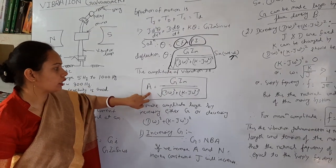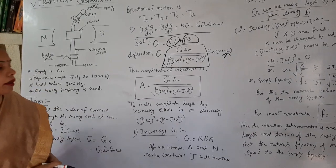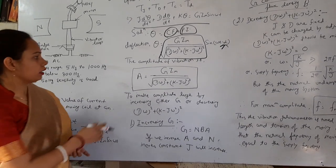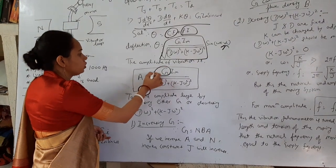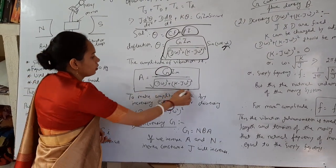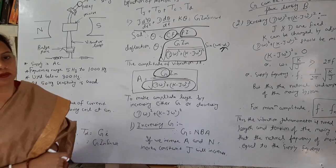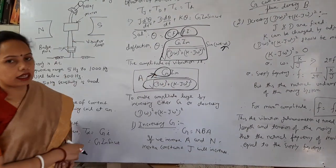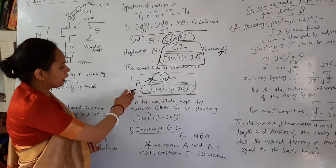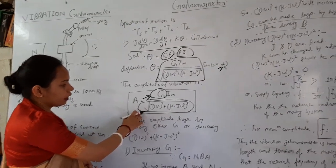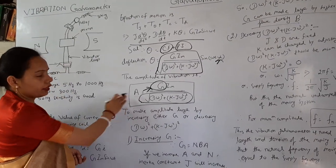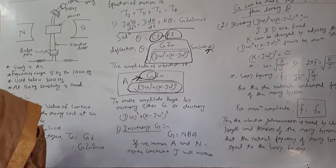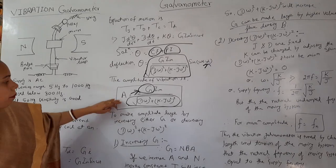So we should have to achieve this amplitude as maximum. So how we can achieve this maximum? By controlling this value G or by controlling this value. So if we increase G, the galvanometer constant, then it will increase. Or if we will decrease this value, then it will increase. Then we will derive the conditions how it can be maximum.